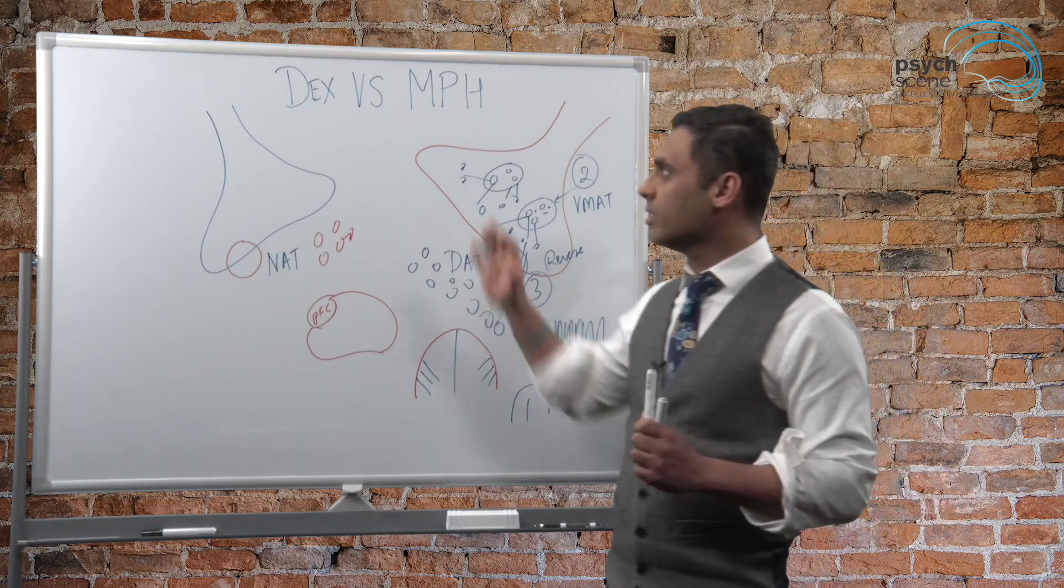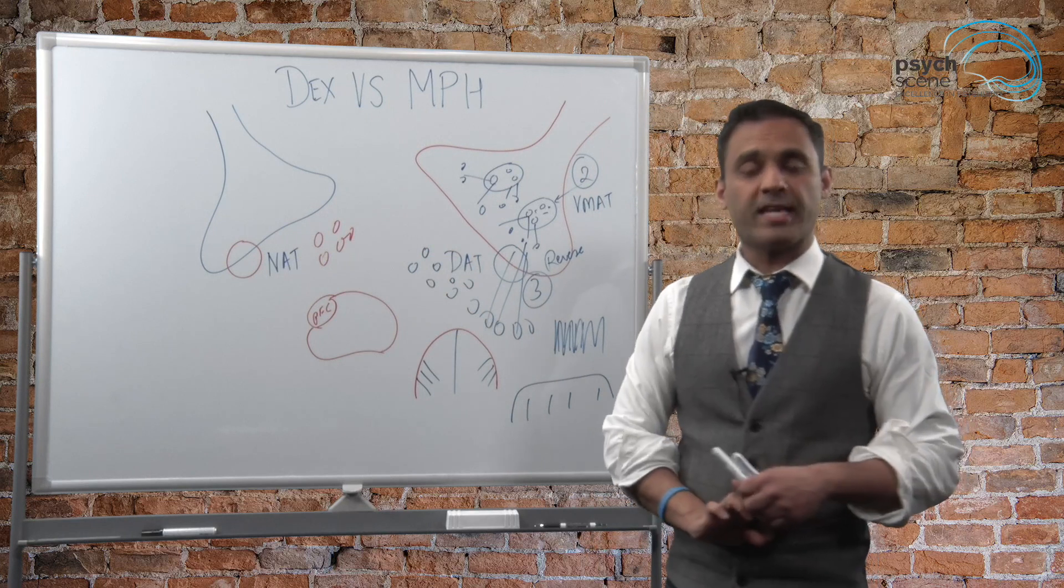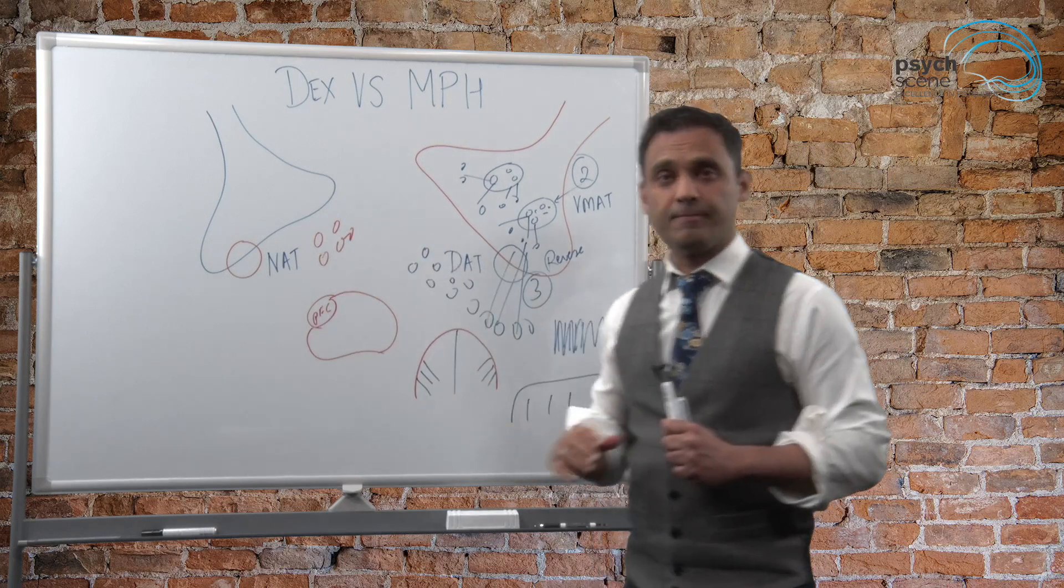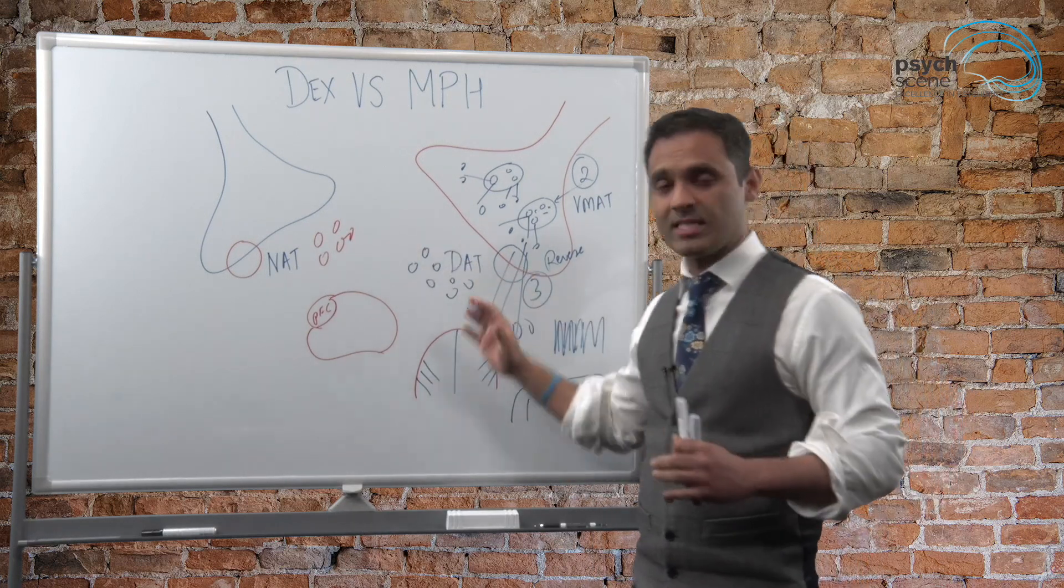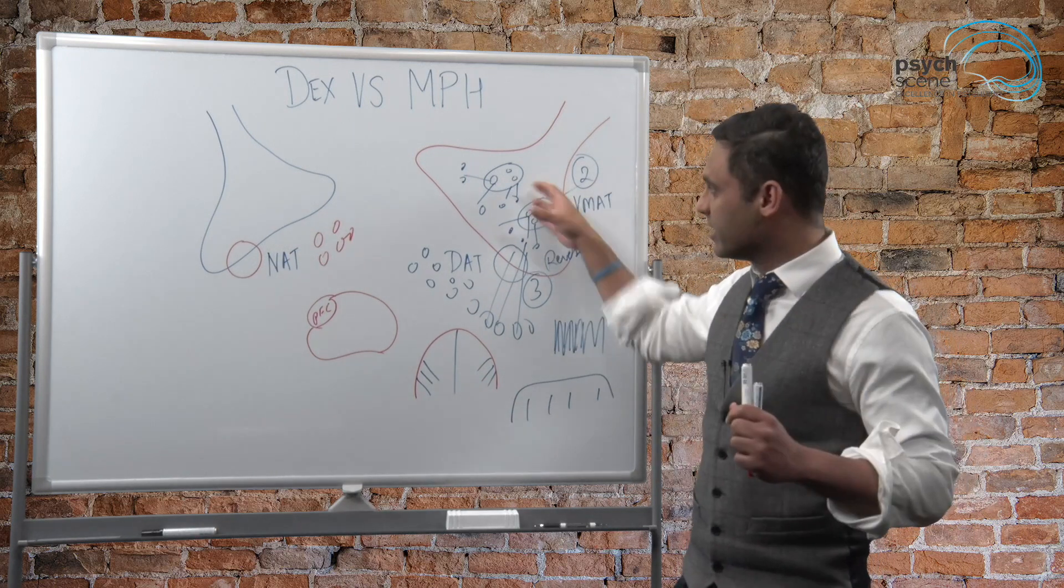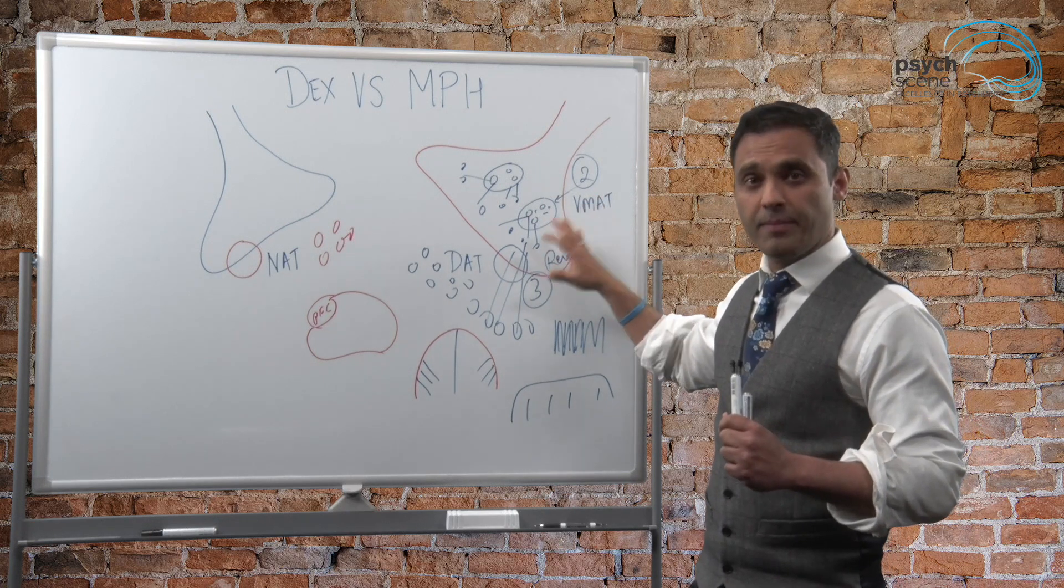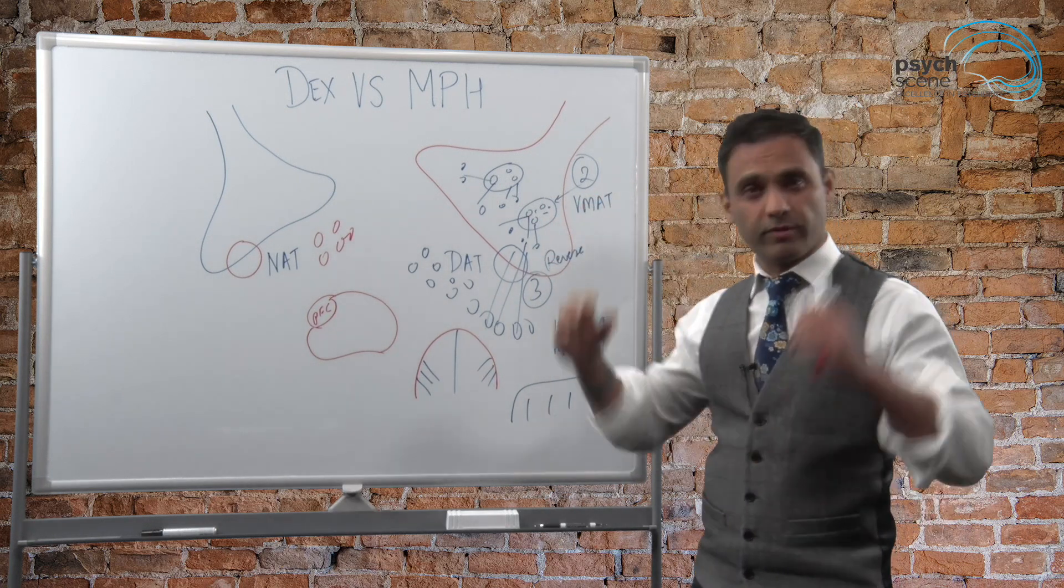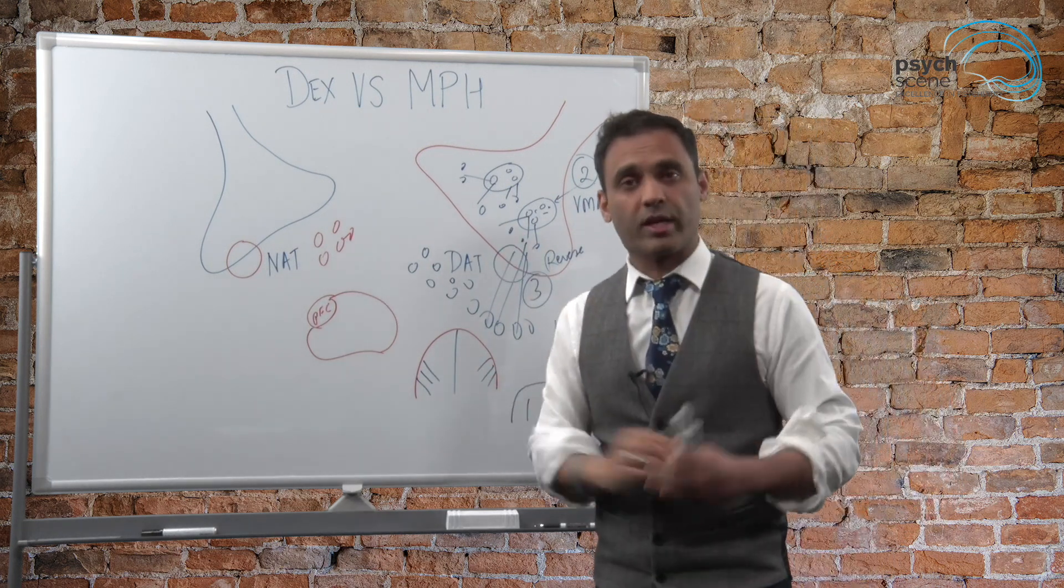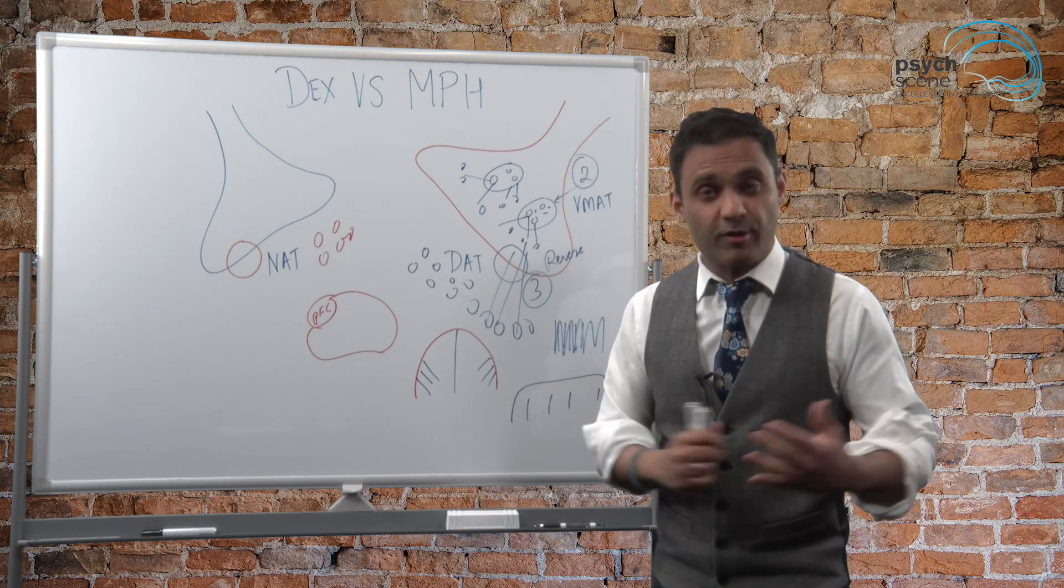So in summary, methylphenidate, DAT, NAT, non-competitive inhibitor, you get dopamine, you get noradrenaline. With amphetamines, you get these three-pronged effect: DAT NAT one, two, competitive VMAT inhibitor so release of dopamine into the cytosol and then reverse dopamine transporter inhibition. So release all of that dopamine from the cytosol into the synaptic cleft for that euphoric effect. So I hope that this gives you an idea about the differences and I hope that you found it useful.